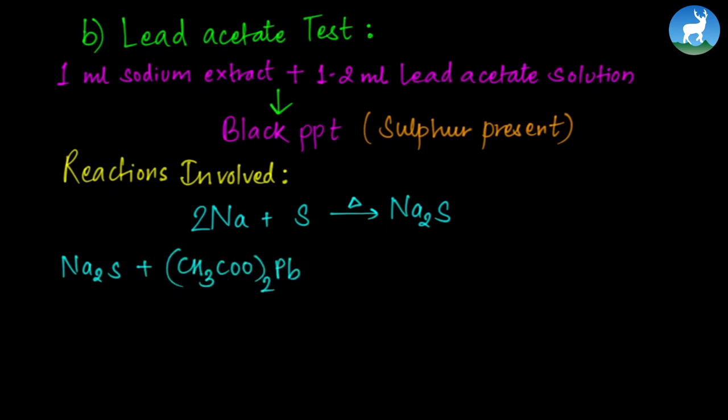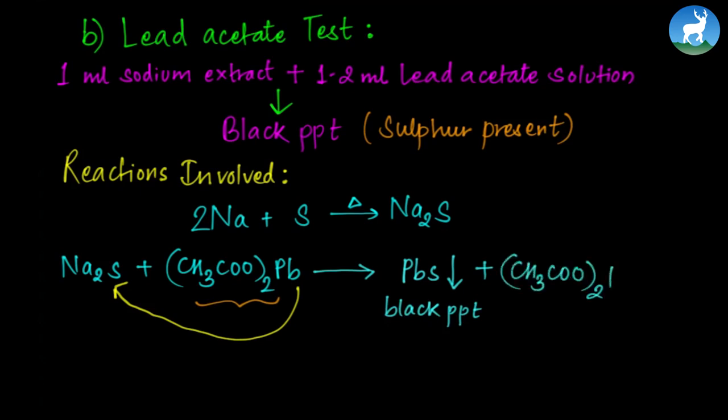Sodium sulfide reacts with lead acetate solution: Na₂S + (CH₃COO)₂Pb → PbS + 2(CH₃COO)Na. Lead sulfide forms as a black precipitate indicating sulfur is present in the compound.